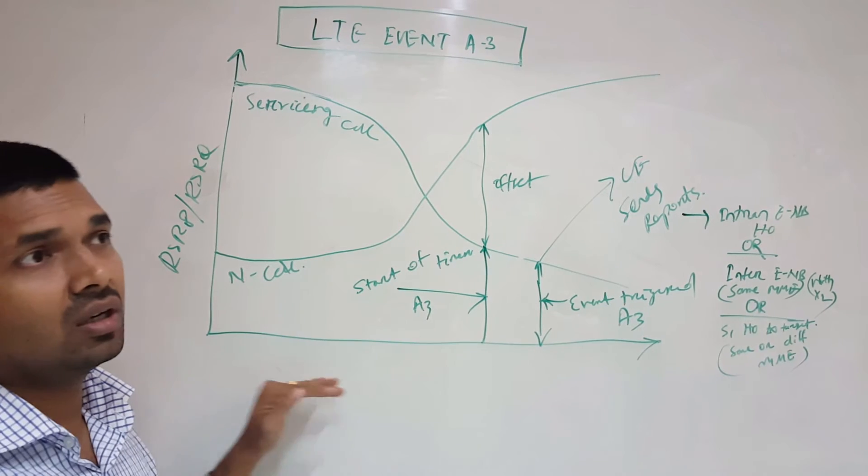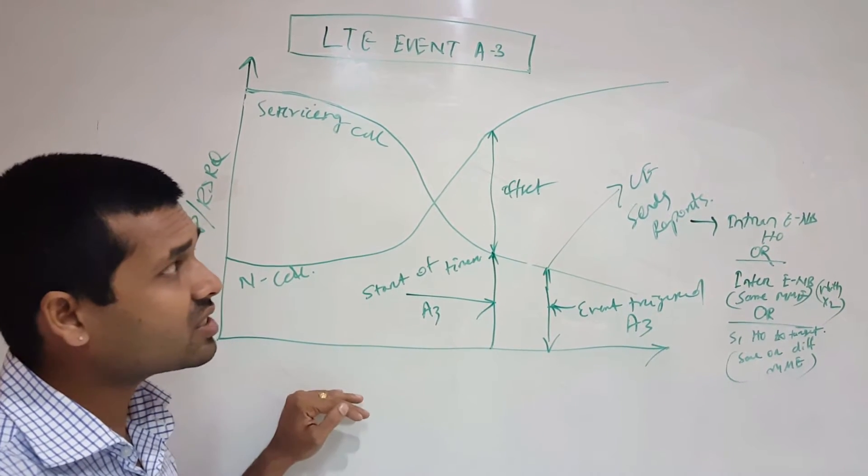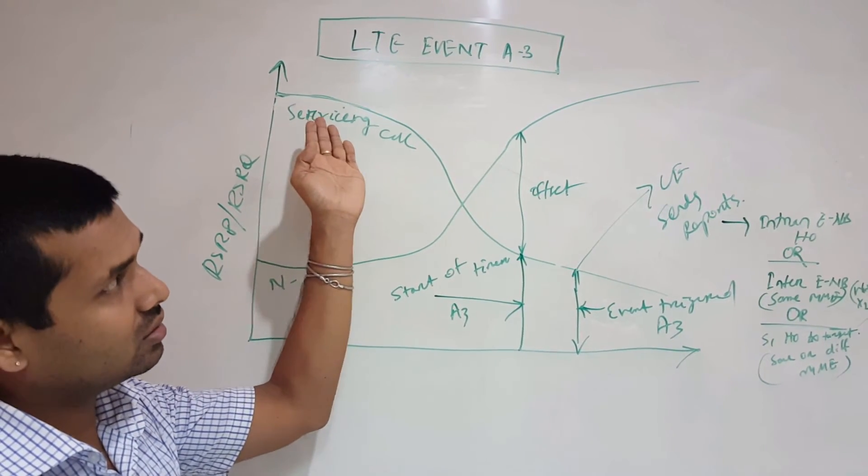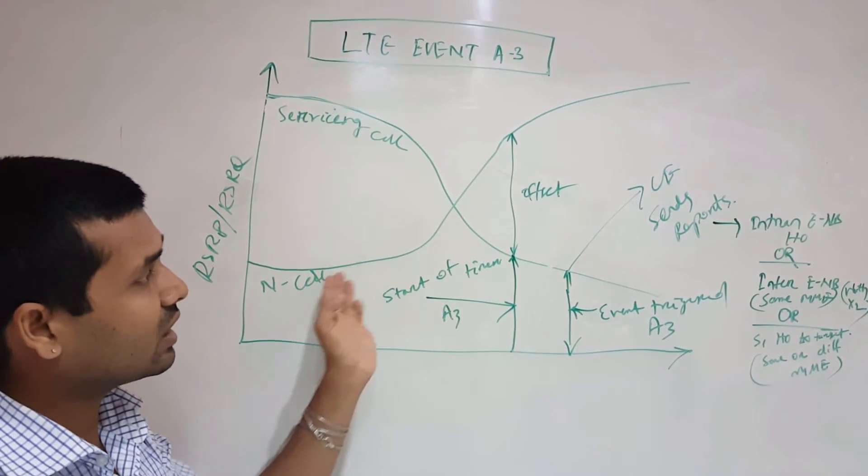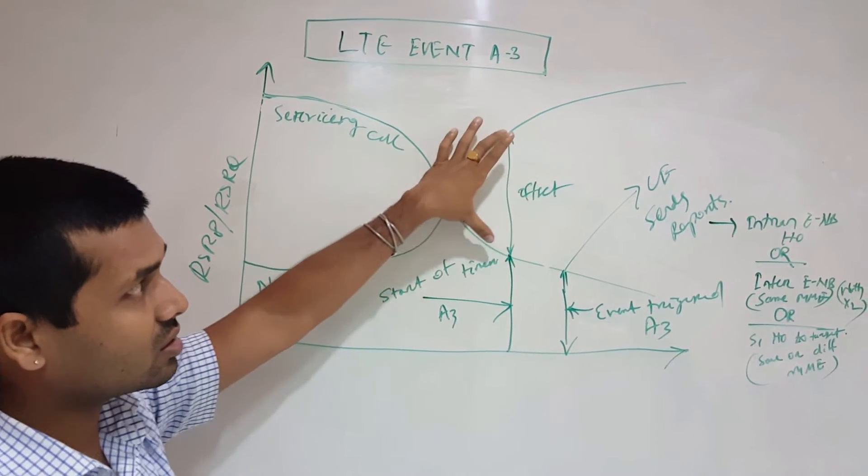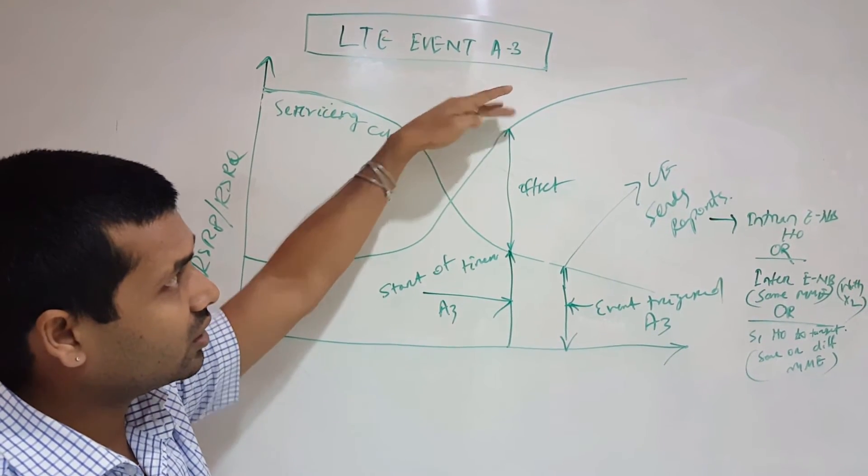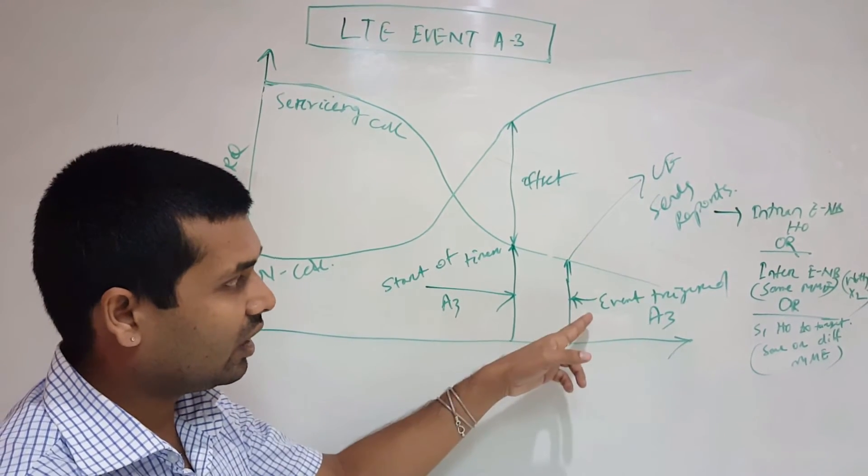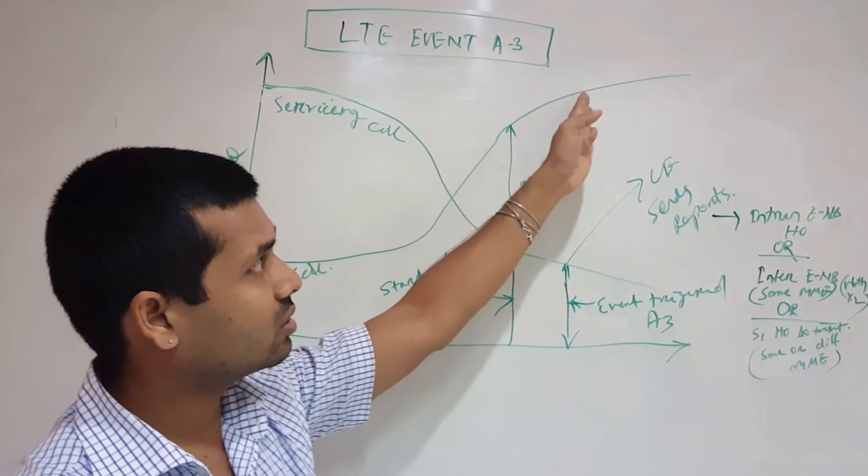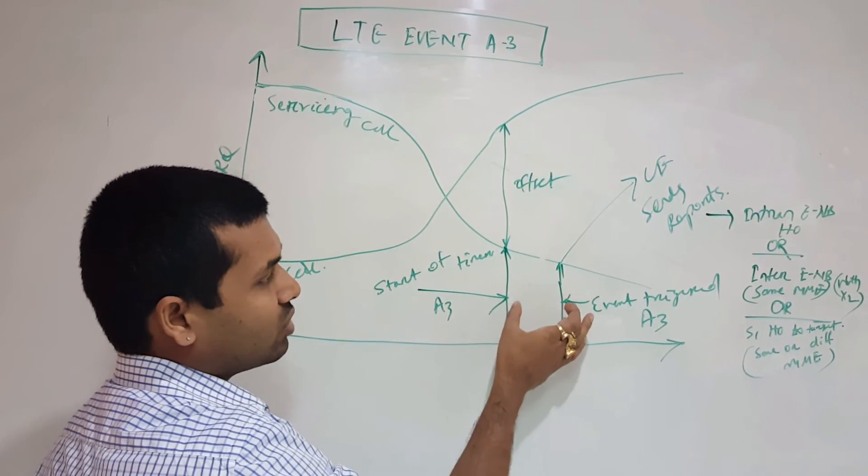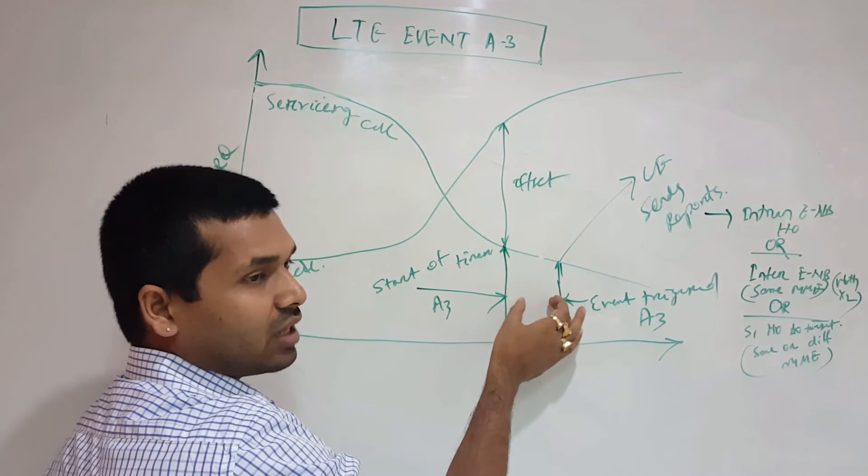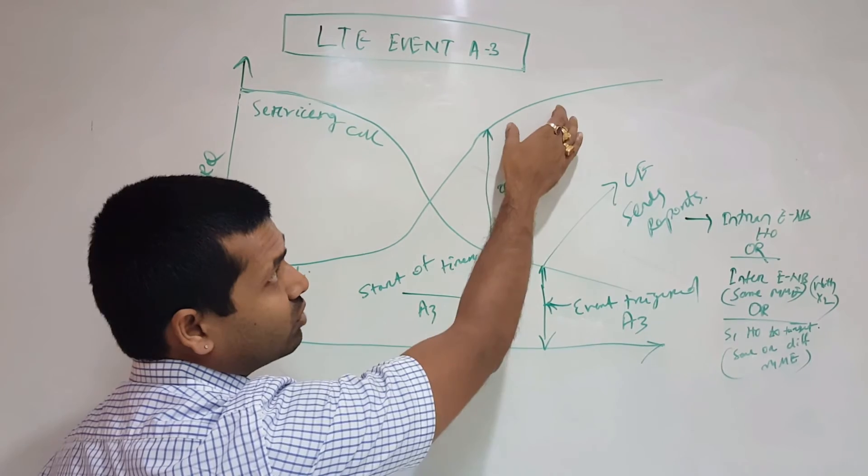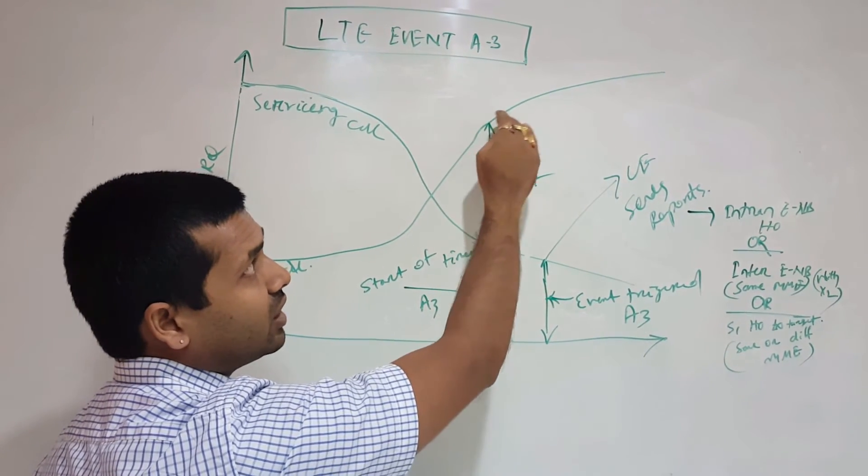This is the event of intra-frequency handover within the LTE frequency. When our serving cell is experiencing bad coverage and the neighbor becomes better than a certain offset, the A3 timer starts. If this condition continues for a certain amount of time, defined by us—maybe 300 milliseconds or 600 milliseconds—and the signal is progressing or maintaining the same pace, we can report the A3 event.